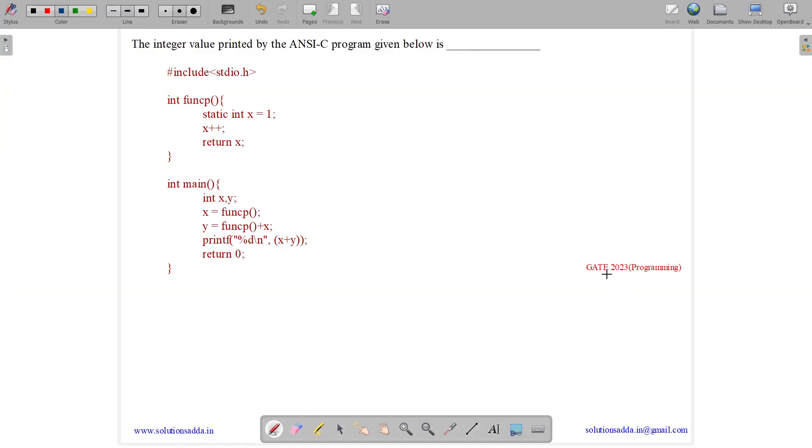This question belongs to programming subject and was asked in GIT CSE 2023. The question states the integer value printed by the ANSI C program given below is. So we have a program and we need to tell the value printed.